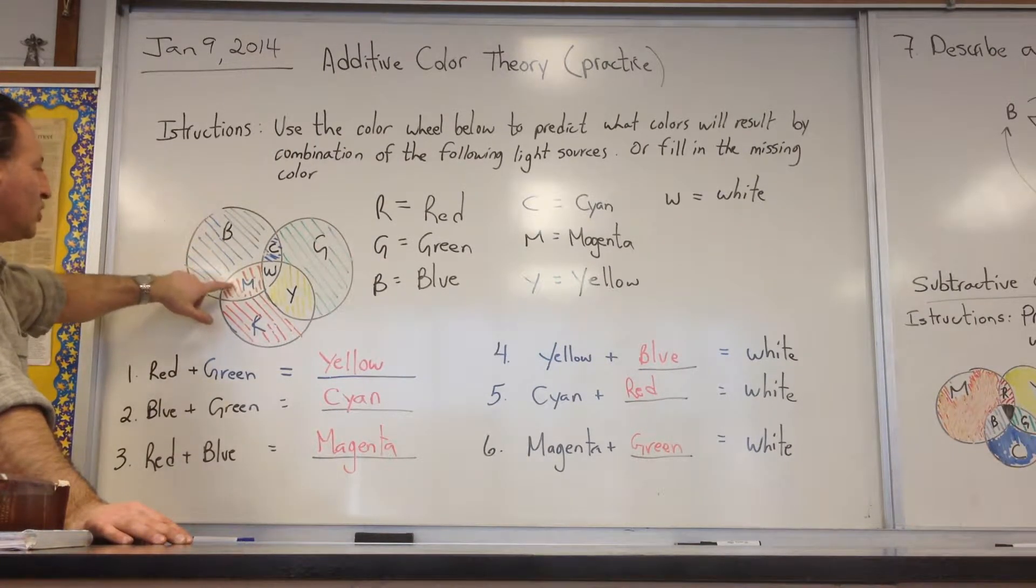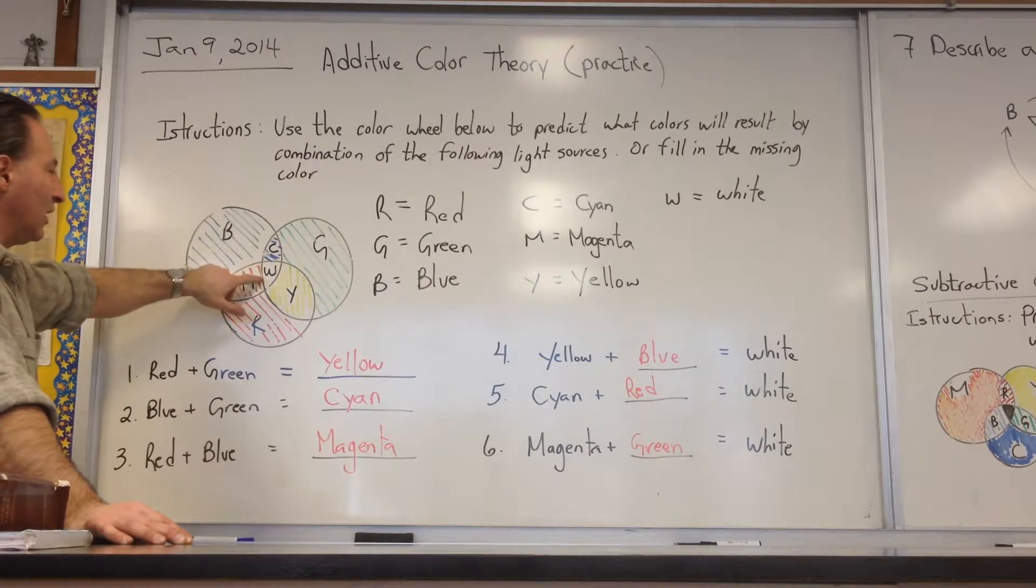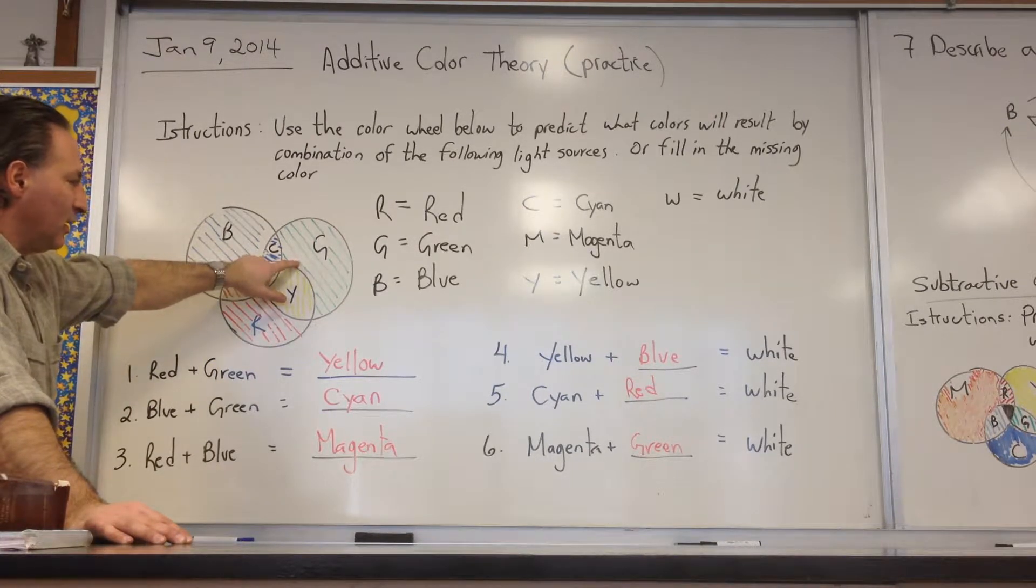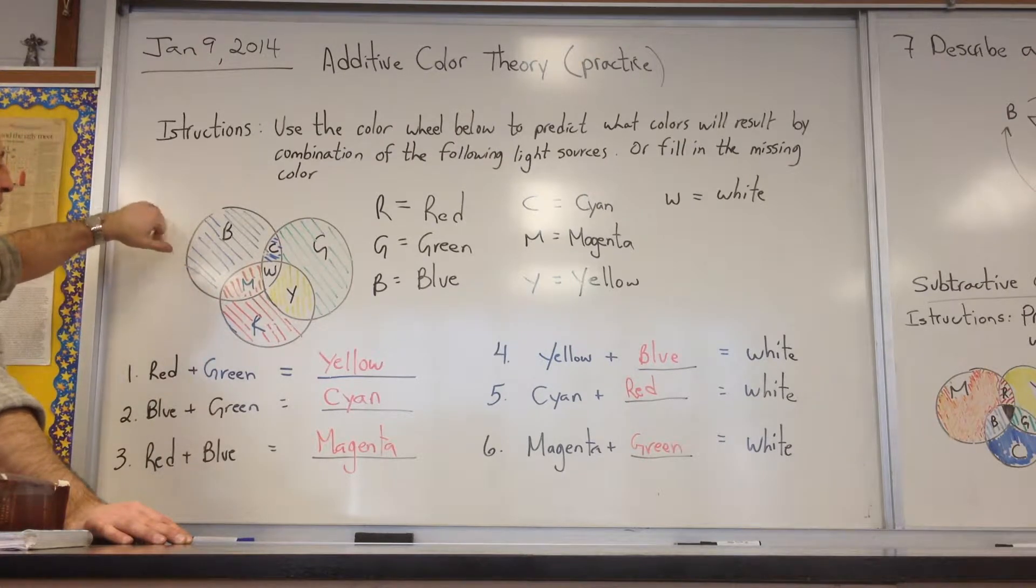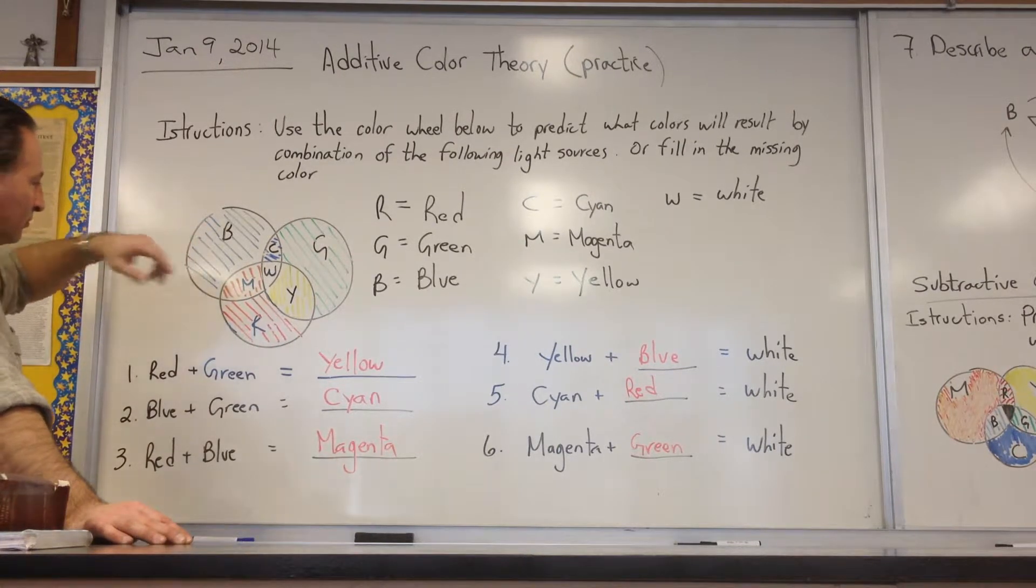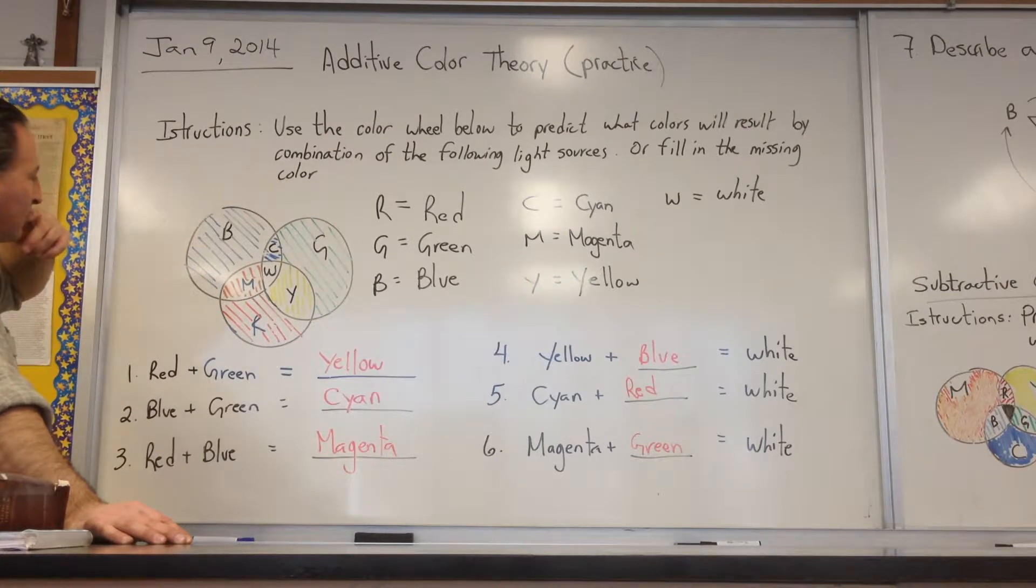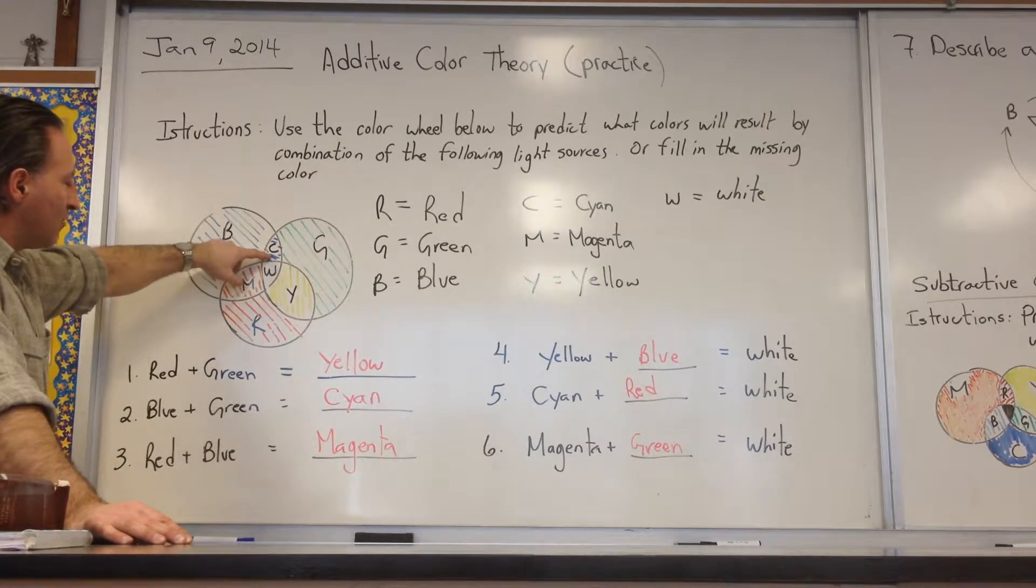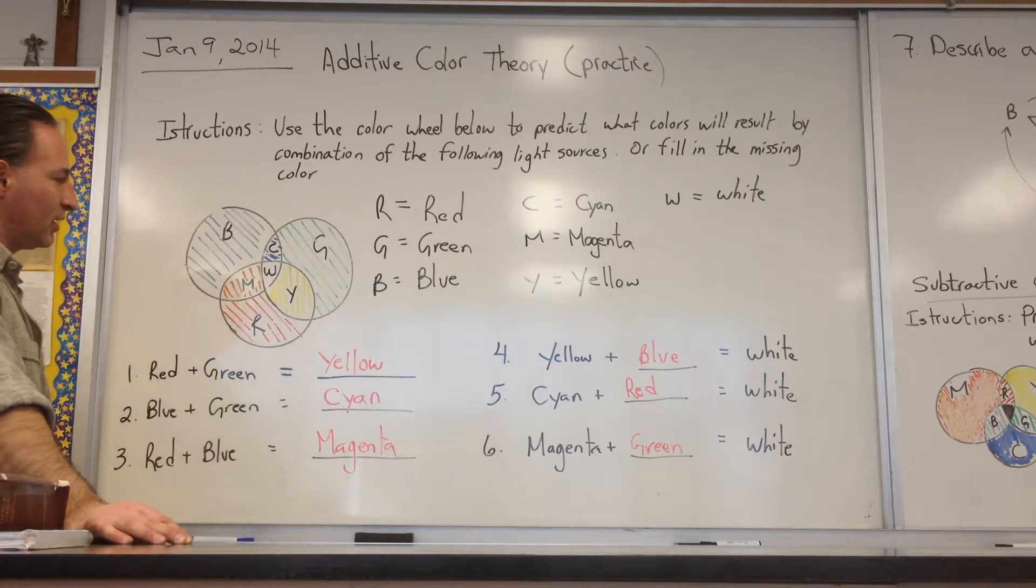If you have magenta light, what color is missing so that you can get white light? The answer is green. Lastly, when you have cyan, the missing color would be red in order to give you white light.